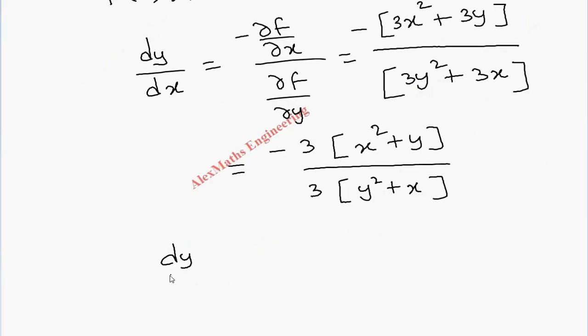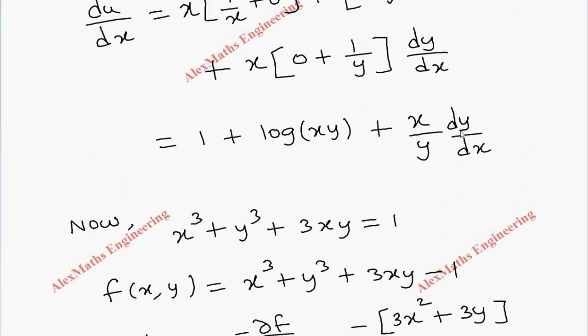So totally, we get dy by dx equal to, after cancelling this, we get minus of x square plus y whole divided by y square plus x. Let's substitute this here.